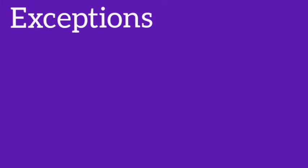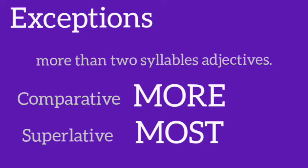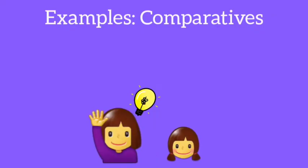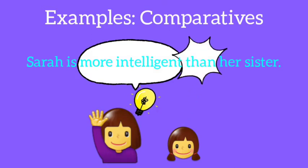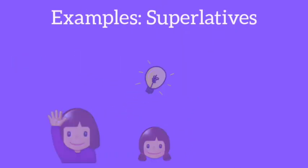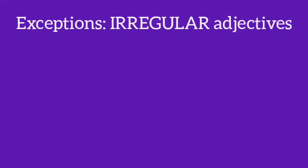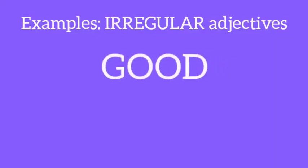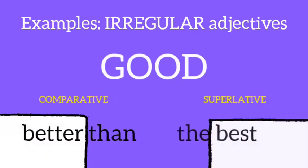As with everything, comparatives and superlatives have some exceptions. If the adjective contains more than two syllables, you must use the word 'more' for comparatives and 'most' for superlatives. For example, in the comparative form: Sarah is more intelligent than her sister. And the superlative form would be: Sarah is the most intelligent person. Also, there are some irregular adjectives. For example, the word 'good' in its comparative form would be 'better than,' and in the superlative form it would be 'the best.'